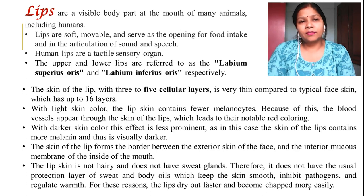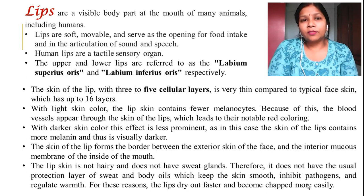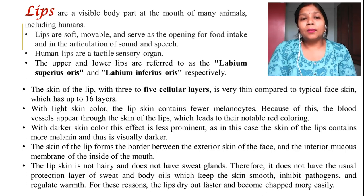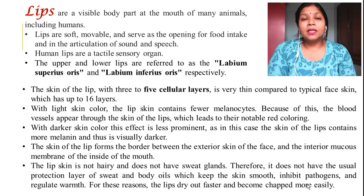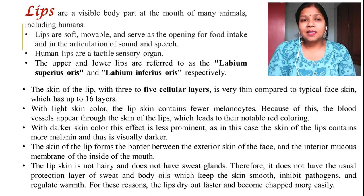Apart from the face, the lips become the most sensitive part of your body because they have only five cellular layers. In people with white complexion, the number of melanocytes is very, very less. Melanocytes are the cells responsible for producing melanin, the pigment responsible for skin coloration. Melanin and keratin combine to give skin coloration. In white-skinned people, reduced melanocytes on the lips results in lips that are more visibly pink in color.